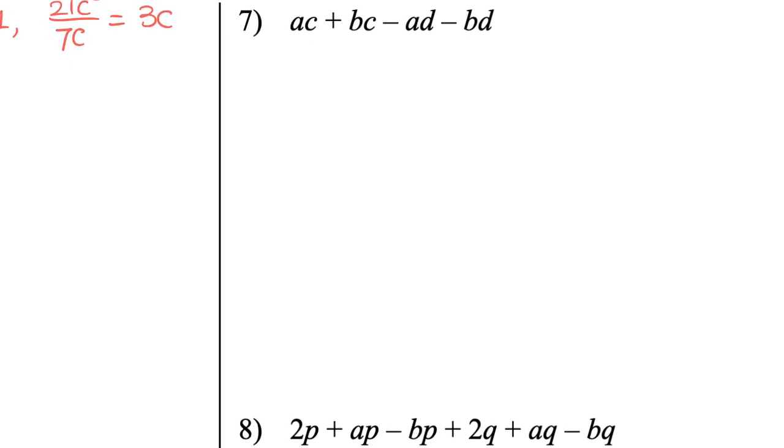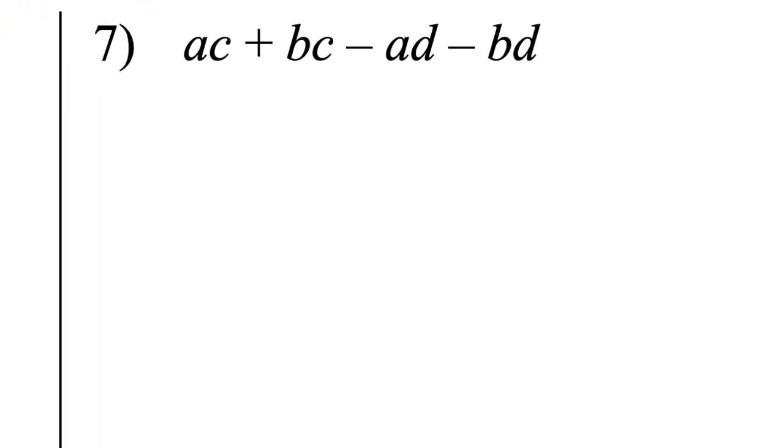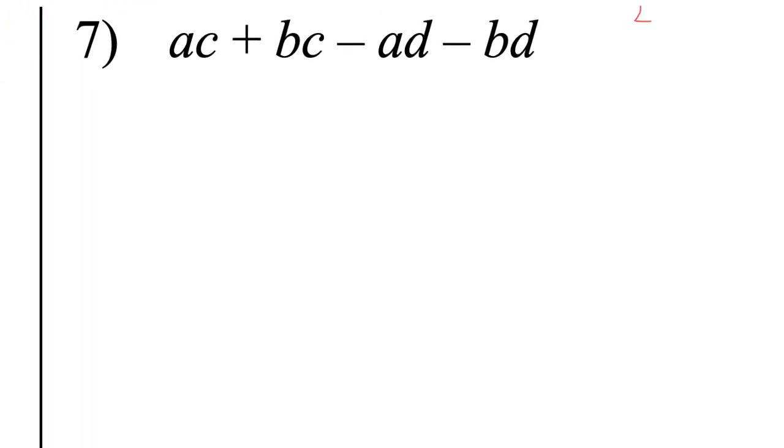And for this one, you can group something together. You have four terms. Then you will have 2-2 and 3-1 combination. But normally we consider 2-2 first. So for the first two items, you have C. And for the second one, you have D. So you can take out C here and then you have A plus B. And for the second one, it will be minus D. So here, take out minus D, and then this is A and B.